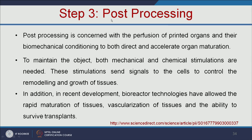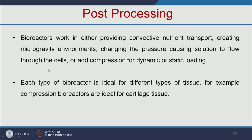Step 3 is post-processing. Post-processing is concerned with the perfusion of printed organs and their biomechanical conditioning to direct and accelerate organ maturation. To maintain the organ, both mechanical and chemical stimulations are needed. These stimulations send signals to the cells to control the remodeling and growth of tissues. Recent developments in bioreactor technologies have allowed rapid maturation of tissues, vascularization of tissues, and the ability to survive transplantation. Bioreactors work by providing nutrient transport or creating microgravity environments. Each type of bioreactor is ideal for different types of tissues — for example, compression bioreactors are ideal for cartilage tissue. This artificially printed heart is growing in a bioreactor.